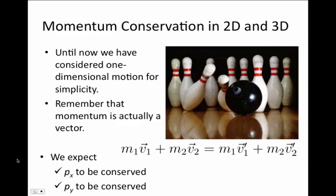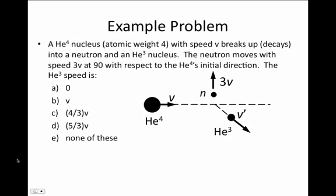Let's look at an example of momentum conservation in both the x and y directions. Consider a helium-4 nucleus which disintegrates into a neutron and a helium-3 nucleus. Helium-3 is an isotope consisting of two protons and one neutron, rather than the two protons and two neutrons of helium-4. Helium-4 has atomic mass 4, a neutron has atomic mass 1, and helium-3 has atomic mass 3.